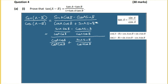Now we cancel terms. In the numerator, the cos(b)'s cancel in the first term and the cos(a)'s cancel in the second term. In the denominator, the cos(a)cos(b) terms cancel to give 1, and the remaining term gives tan(a)tan(b).